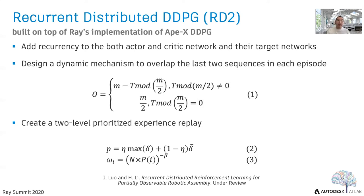Therefore, we developed two additional techniques to stabilize training. First, we design a dynamic mechanism to overlap the last two sequences in each episode. Adjacent sequences overlap by M/2 time steps, and batches of sequences never cross episode boundaries. Because episode lengths vary in our assembly tasks, the last overlap in each episode is a dynamic variable between M/2 and M-1, calculated as shown in formula 1.